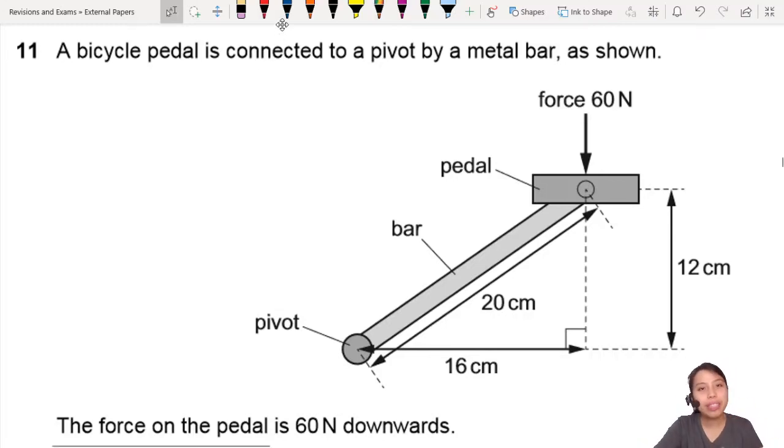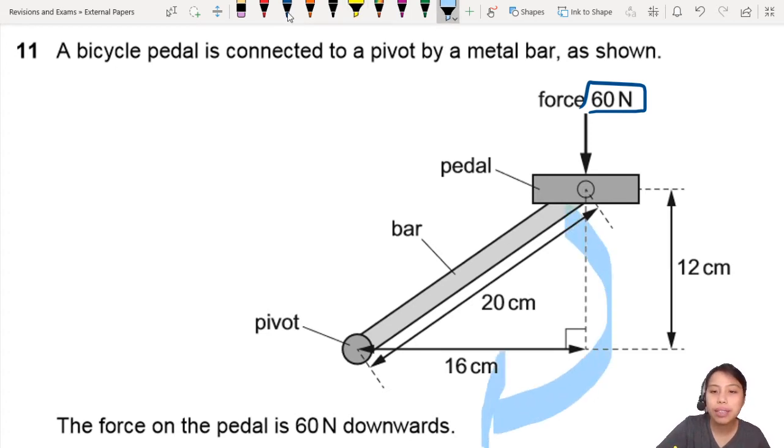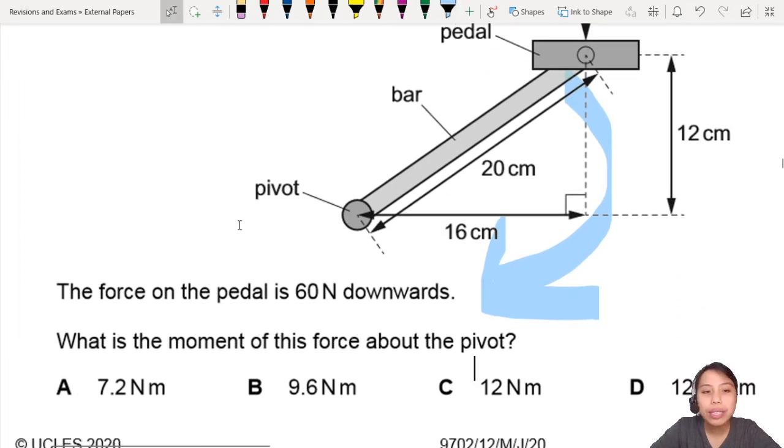Here you have a bicycle pedal connected to a pivot by a metal bar. A force is pushing down on the bicycle pedal, which will cause the whole bicycle pedal to turn clockwise. What are we asking for? What is the moment of force about the pivot?